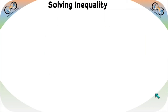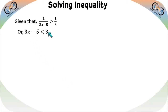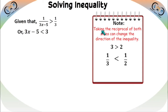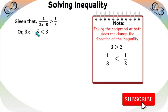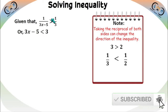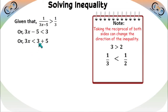Now the second inequality: given 1/(3x−5) > 1/3. Taking reciprocals on both sides (which changes the direction), we get 3x−5 < 3. Adding 5 to both sides: 3x < 8, so x < 8/3.